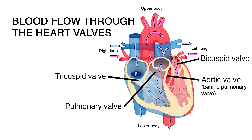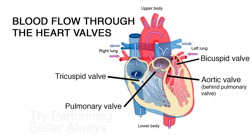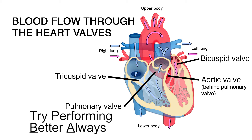Sound confusing? Just remember: 'try performing better always' for the order of blood flow through the valves — Tricuspid, Pulmonary, Bicuspid, and Aortic.